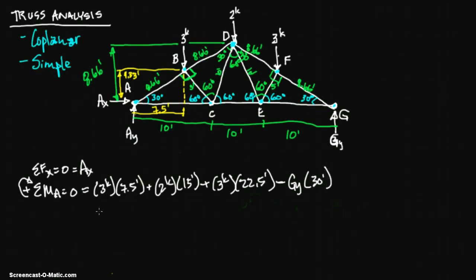We'll solve for GY. So we have 3 times 7.5 plus 2 times 15 plus 3 times 22.5. Then we take the negative 30 GY, and it'll become a positive GY when you put it over to the other side. You divide 120, which is the sum of the others, divided by 30 equals 4 kips. And it's a positive 4 kips, so we know our assumption was correct. It goes up.